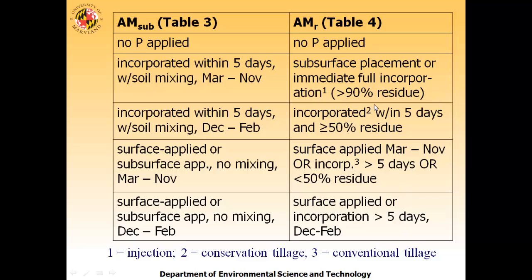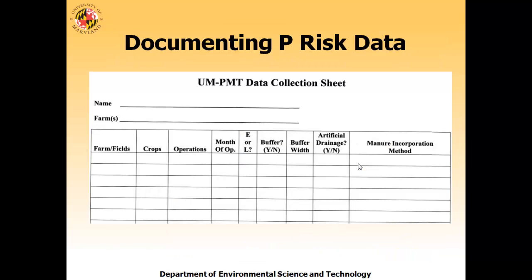For subsurface drainage, that's Table 3 in the Phosphorus Management 2 publication. There are four options tailored to whether this is a subsurface pathway or a runoff pathway—they're not the same. The 1, 2, and 3 refer to the intensity of incorporation: one is essentially injection, two is conservation tillage, and three is conventional tillage. We came up with a new information-gathering sheet for the phosphorus management tool, recognizing the need to indicate buffer width and manure incorporation methodology. This is available on our website.